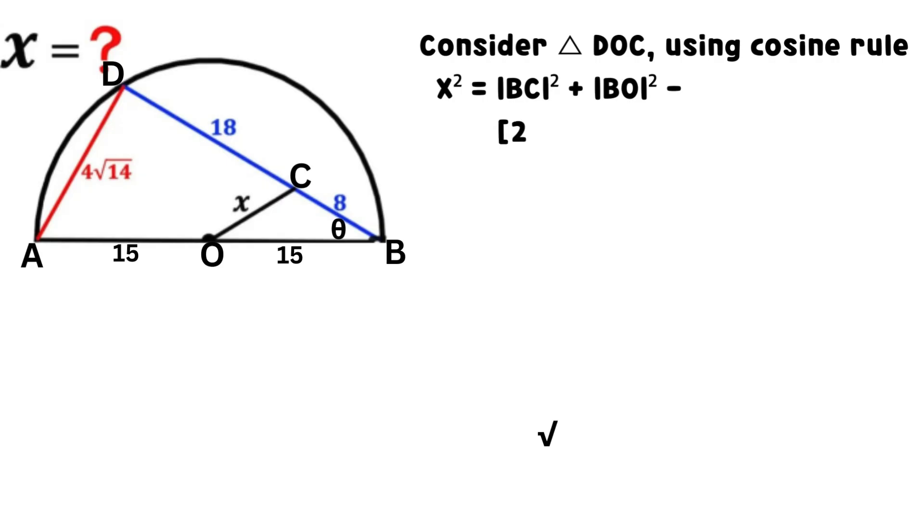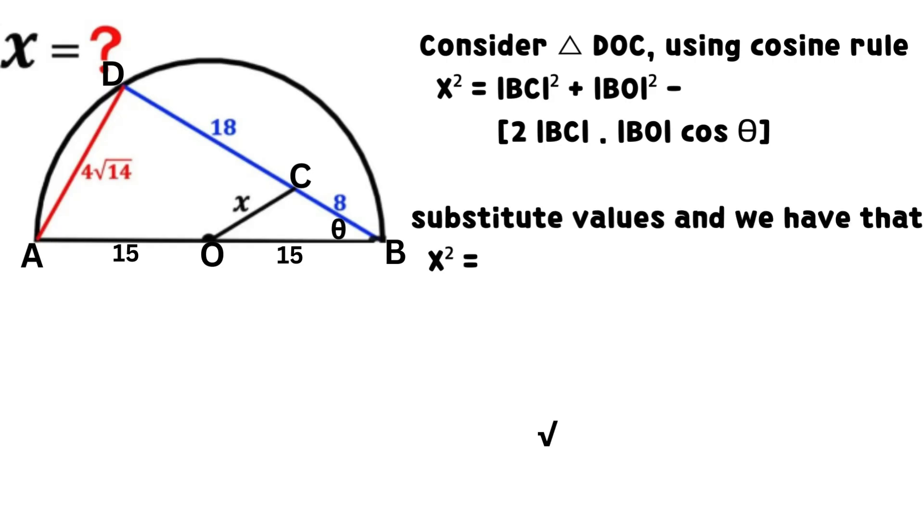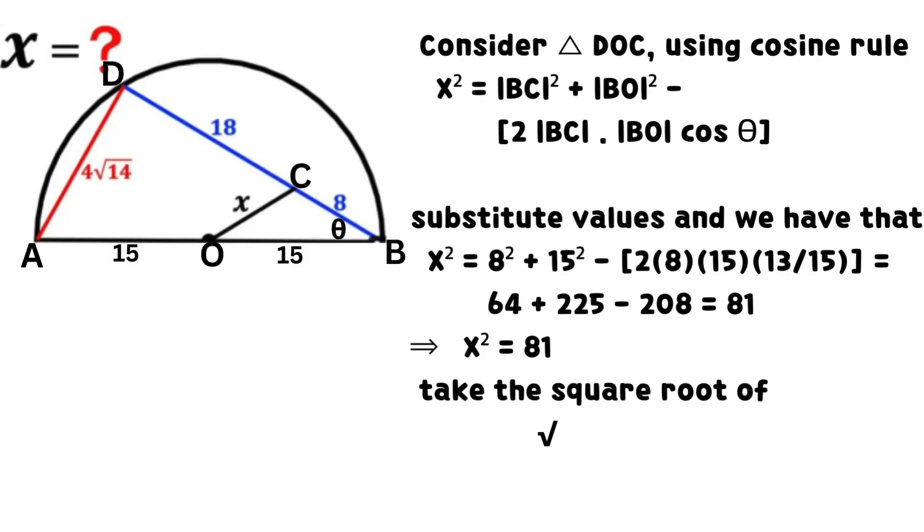Consider triangle DOC. Using cosine rule, x² equals BC² plus BO² minus 2 times BC times BO times cosine theta.